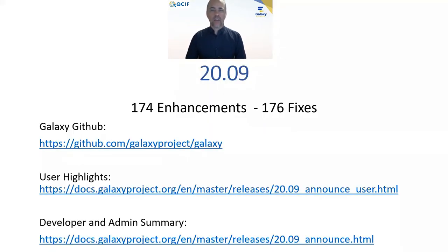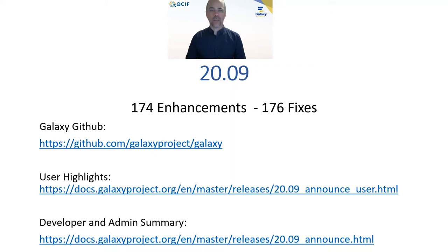The 2009 update has just been released. It contains 174 enhancements to the codebase and 176 fixes. We thank all those people that have utilised the Galaxy GitHub for putting in pull requests and issue requests. We also thank the over 200 plus contributors to fixing and maintaining that codebase that allows these tri-yearly updates to come out so smoothly.